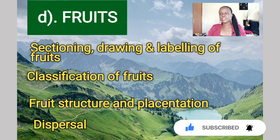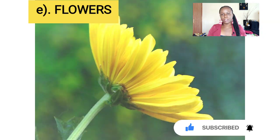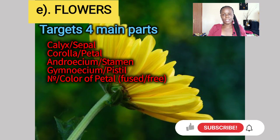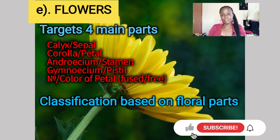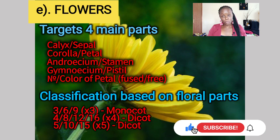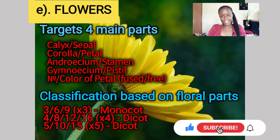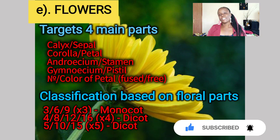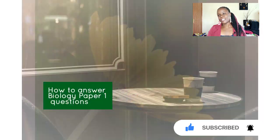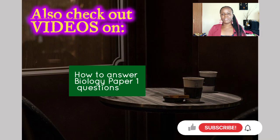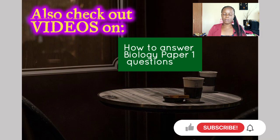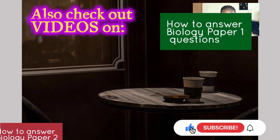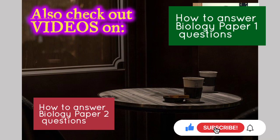Fruit structure and placentation are another area. For flowers, you must study thoroughly the four main parts as well as the classification of flowers as detailed above. Also check out videos on how to answer Biology Paper 1, Paper 2, and Paper 3 questions.